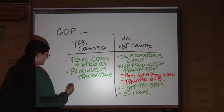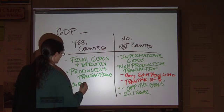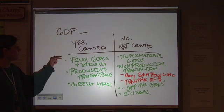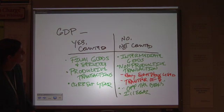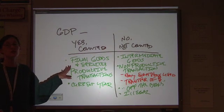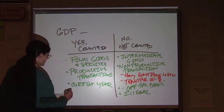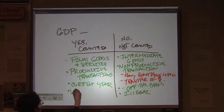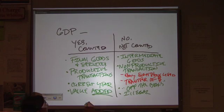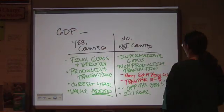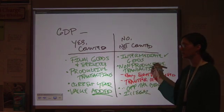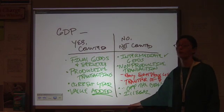So, we want stuff that happens in the current year. We want final goods. We want productive transactions. These are going to be the biggest things that you're going to want to remember. And we want to look only at value added, not value inflated. Because if you count all of the intermediate goods, you're going to get a number that is not really reflective of what you're doing nationally.